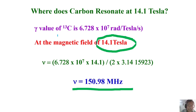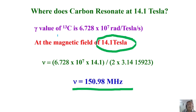At 14.1 tesla for carbon-13, the resonating frequency is approximately 150.98 MHz — again about four times less than the proton's 600 MHz at the same field. In the 2.35 tesla field, proton was at ~100 MHz and carbon at ~25 MHz. The general conclusion: all nuclei resonate in the megahertz range. Among all stable isotopes, the proton has the highest gamma and therefore the highest resonating frequency.